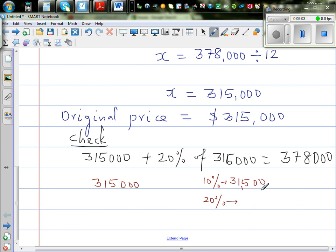Let's add 63,000 to this. 63,000 plus 315,000, which is 378,000.